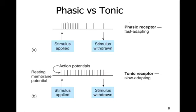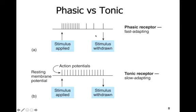Phasic receptors, on the other hand, are interesting in that with a sustained stimulus, you will start to get fewer and fewer action potentials. With the same amount of stimulus applied and sustained, you see fewer and fewer action potentials — that's why it's called fast adapting. It's adapting to that stimulus, and now you need more stimulus to maintain that same amount of action potentials. These are really good for detecting change in the environment.